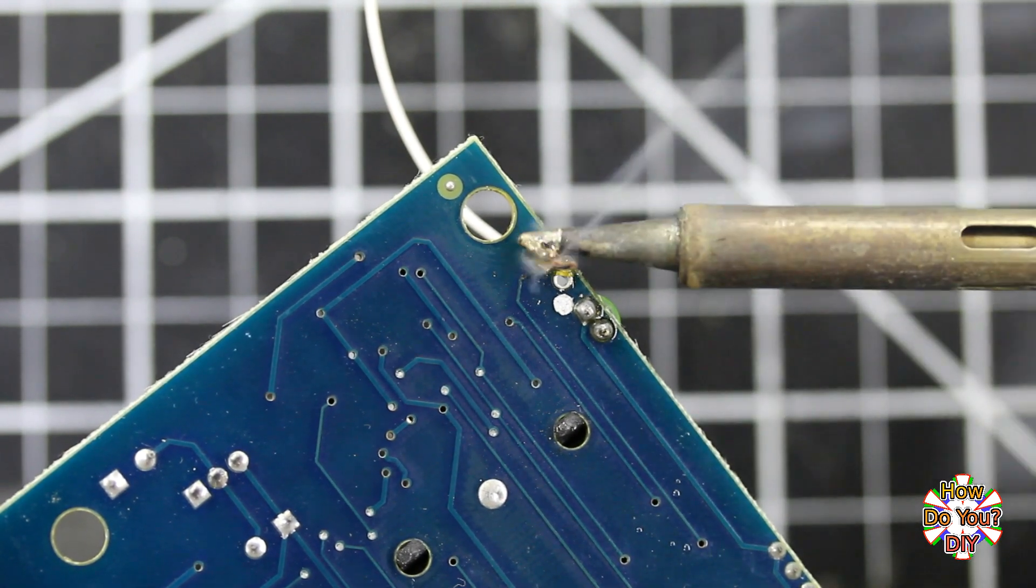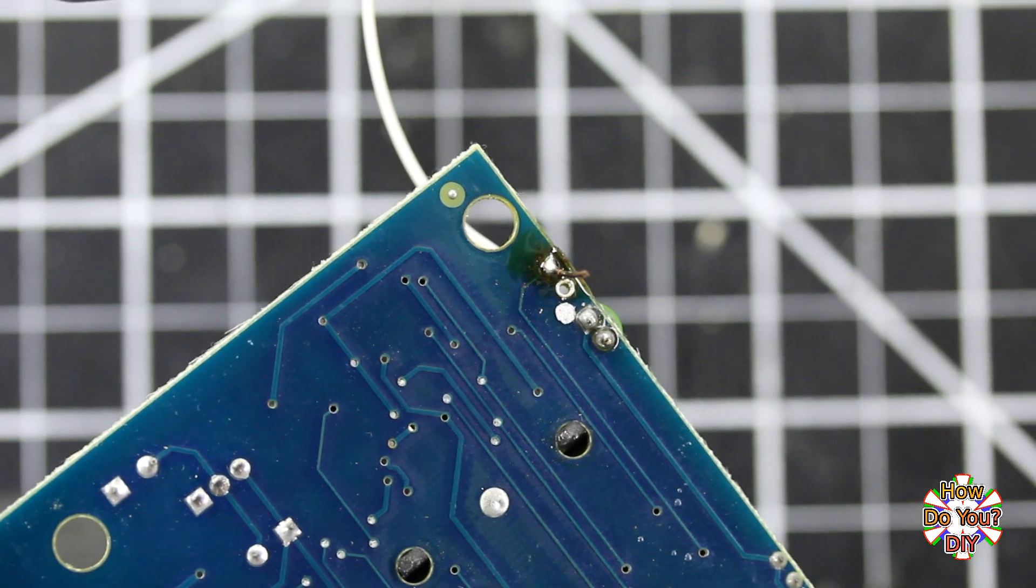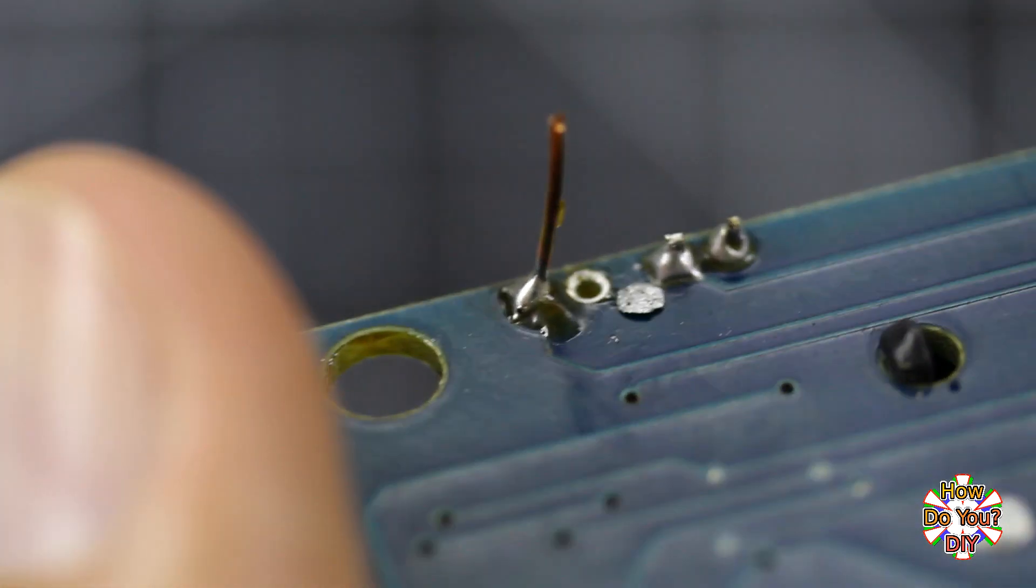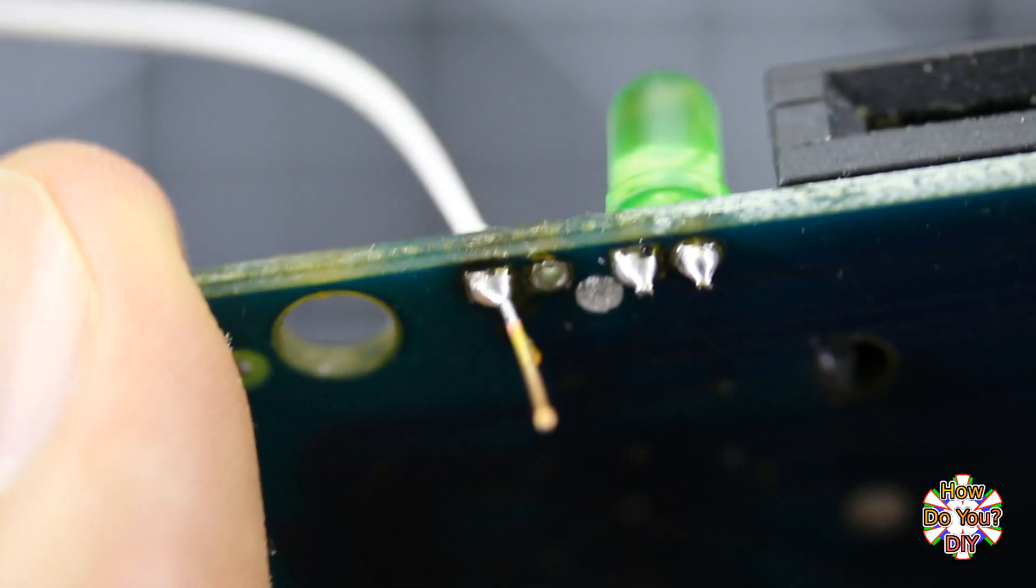In my video about using solder, I mentioned a little bit about flux, which works well for removing that layer. Usually the solder that you use for electronics will already have flux within it, but it is also helpful to have flux available to use separately.